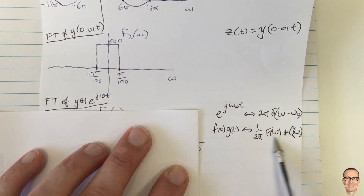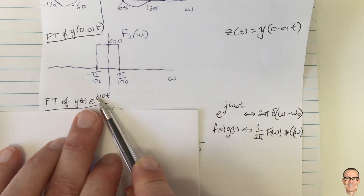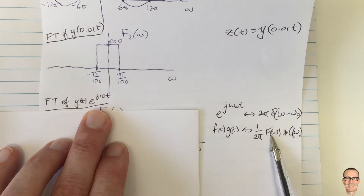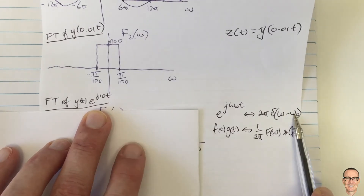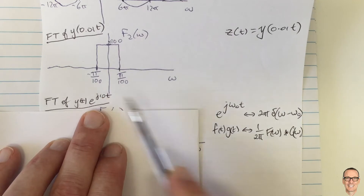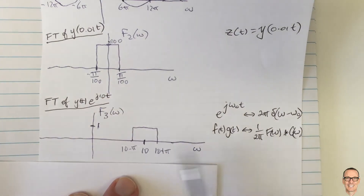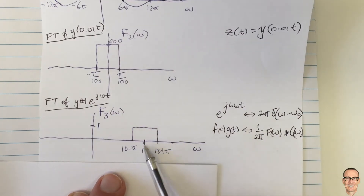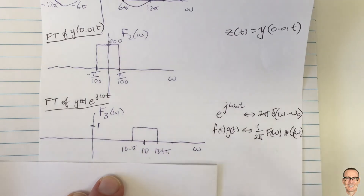We now convolve the Fourier transform of y with the Fourier transform of e^(j10t), which is a delta function. Convolving something with a delta function simply shifts it to the location of the delta. Here ω₀ = 10, so the delta function is at 10, and our rect — the Fourier transform of y — shifts to be centered on 10. The 2π in the delta cancels the 2π scaling factor, so the height remains 1.